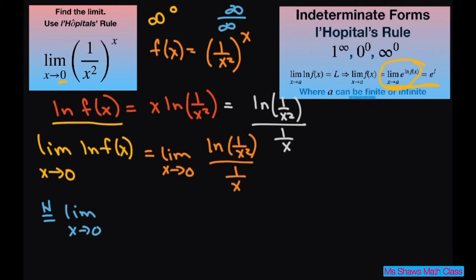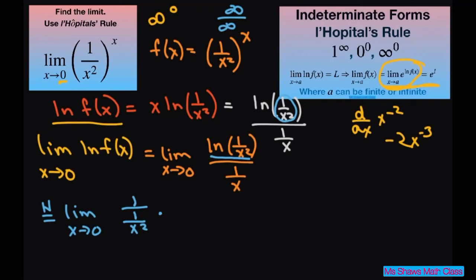So we take the derivative of the numerator. For the numerator, that's going to be 1 divided by (1 divided by x squared), times the derivative of the inner function. When you differentiate x to the negative 2 power with respect to x, you get negative 2x to the negative 3, so that's negative 2 over x cubed. Then differentiate your denominator, which is going to be negative 1 divided by x squared.